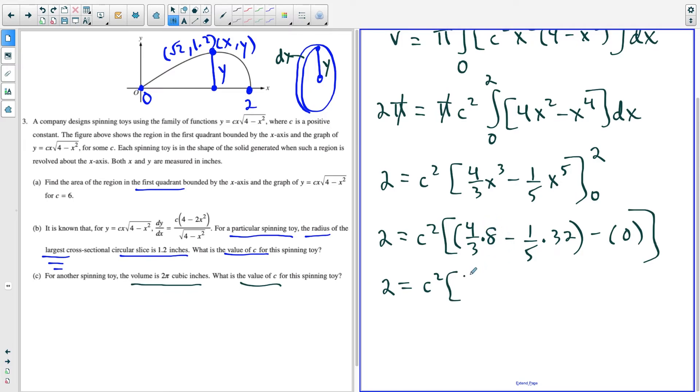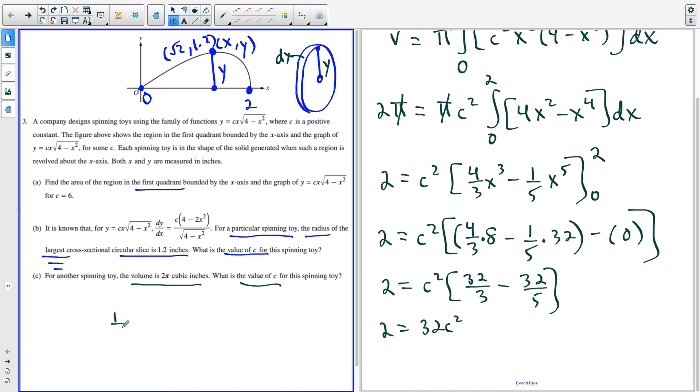And now here we've got two is equal to c squared times, and notice here I'm going to have 32 over three minus 32 over five. So a nice little bit of algebra I could do, notice that I have a common factor of 32 on top. So right away in my head I see that I'm going to have two is equal to 32 c squared times one third minus one fifth. And just on the side, I'll show this here. One third minus a fifth is the same thing as five over 15 minus three over 15, which is going to equal two over 15.